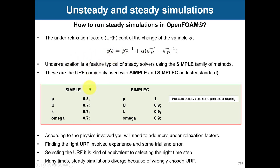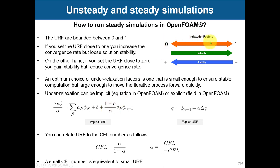Under-relaxation factors are applied to all the variables you are solving, and this factor has a very prominent dependence on the case. These are the common industrial values, but not necessarily for all cases — most of the time you may need to use smaller values. The relaxation factors are bounded between zero and one. As you go closer to one, you iterate faster; if you are closer to zero, it is slower.